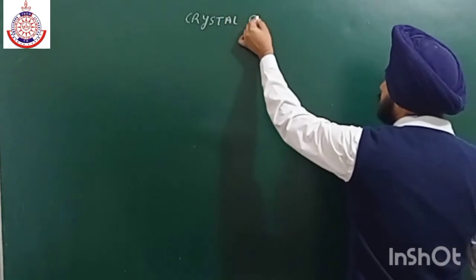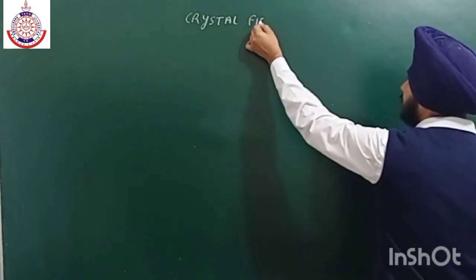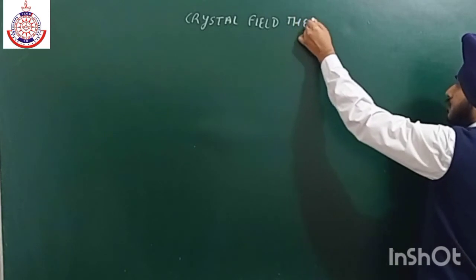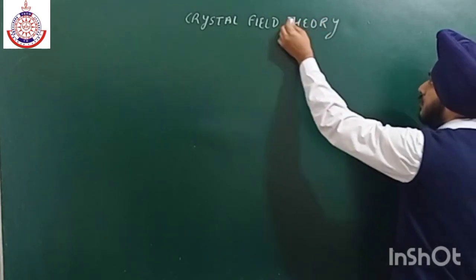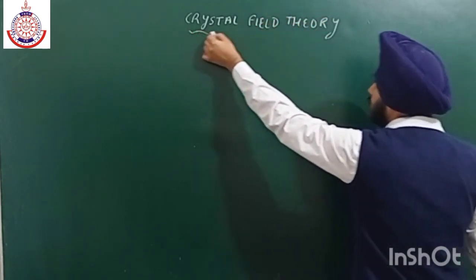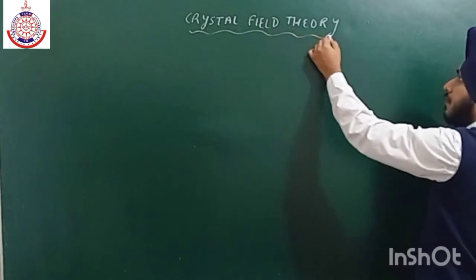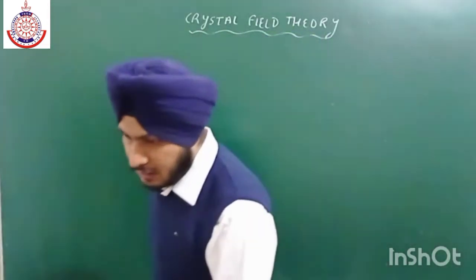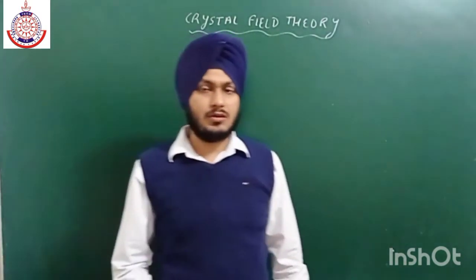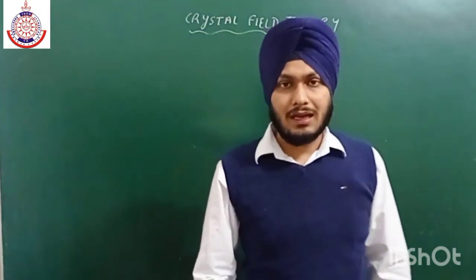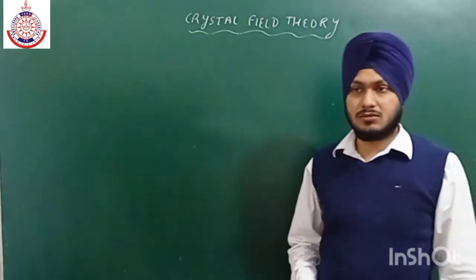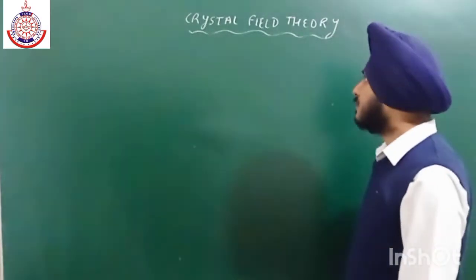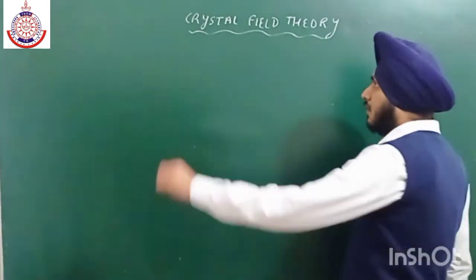So then Crystal Field Theory was introduced. Crystal Field Theory tells us why a complex is high spin or low spin, and it also easily explains the color of the complex. Now let us look at the assumptions of this theory.